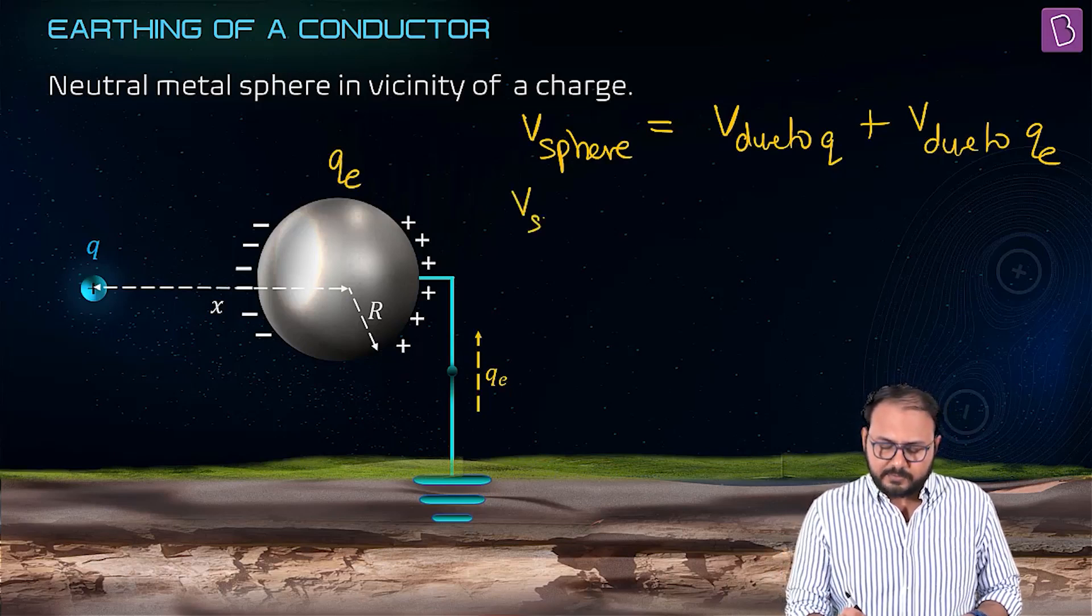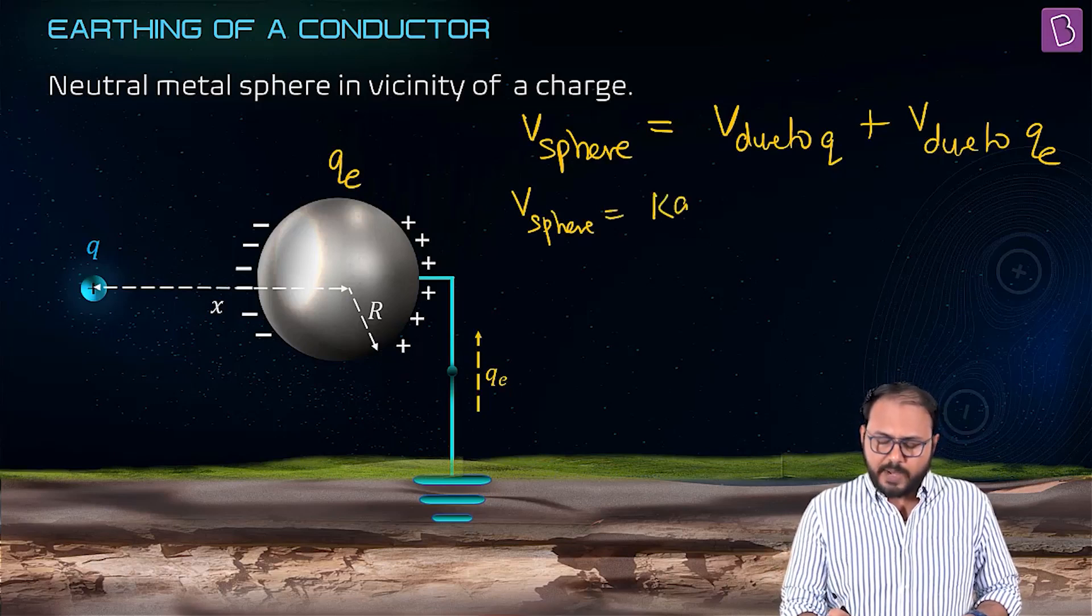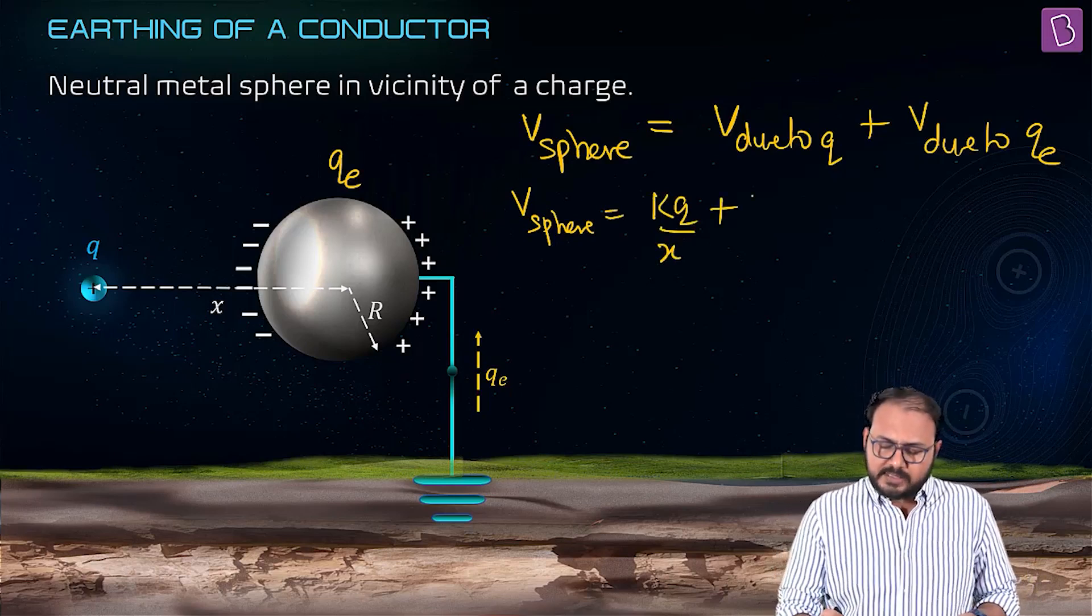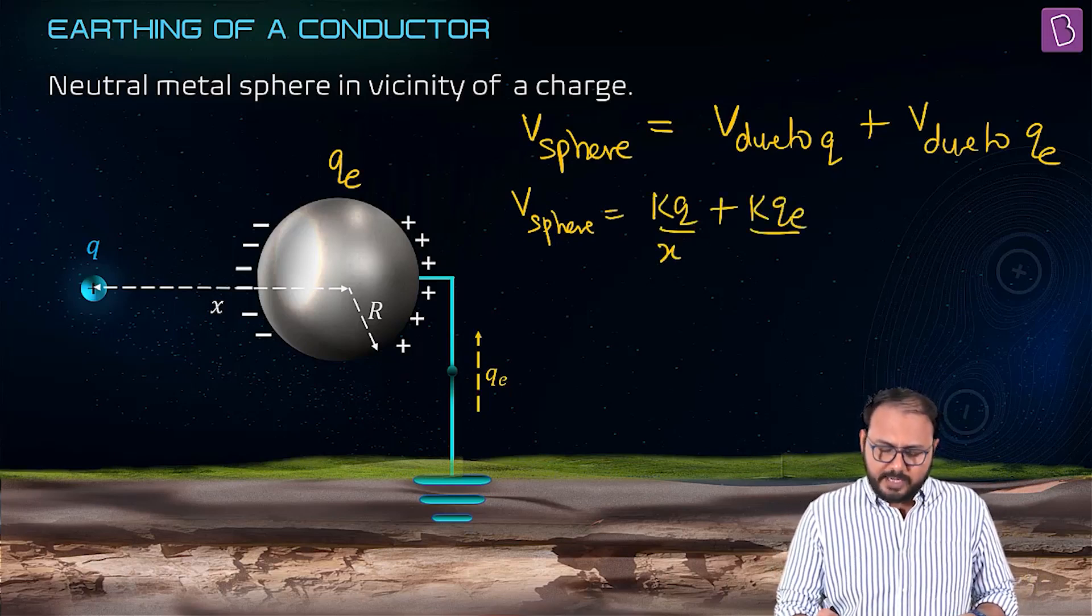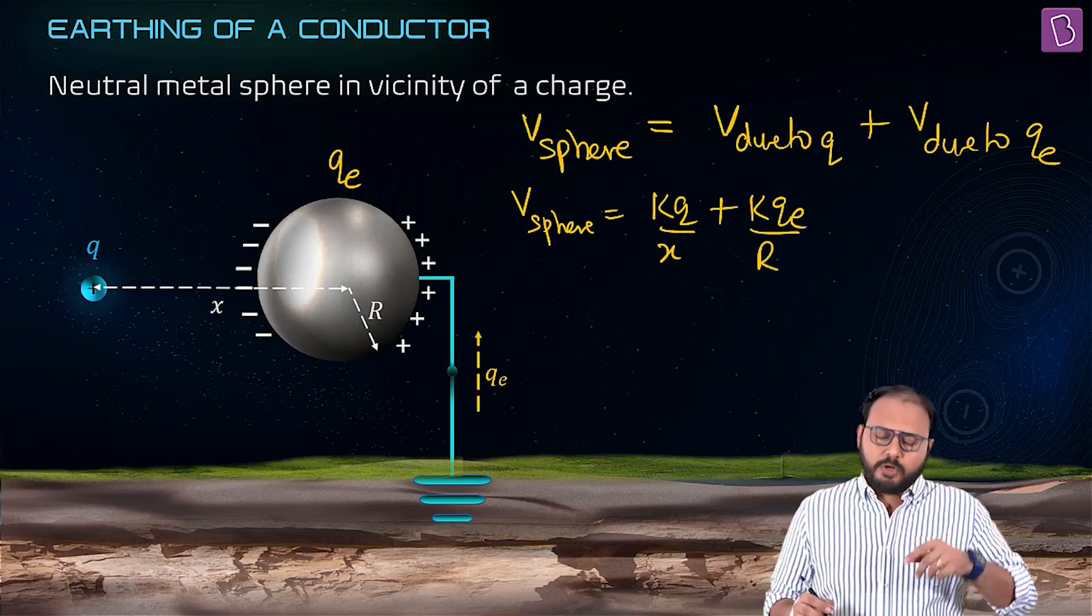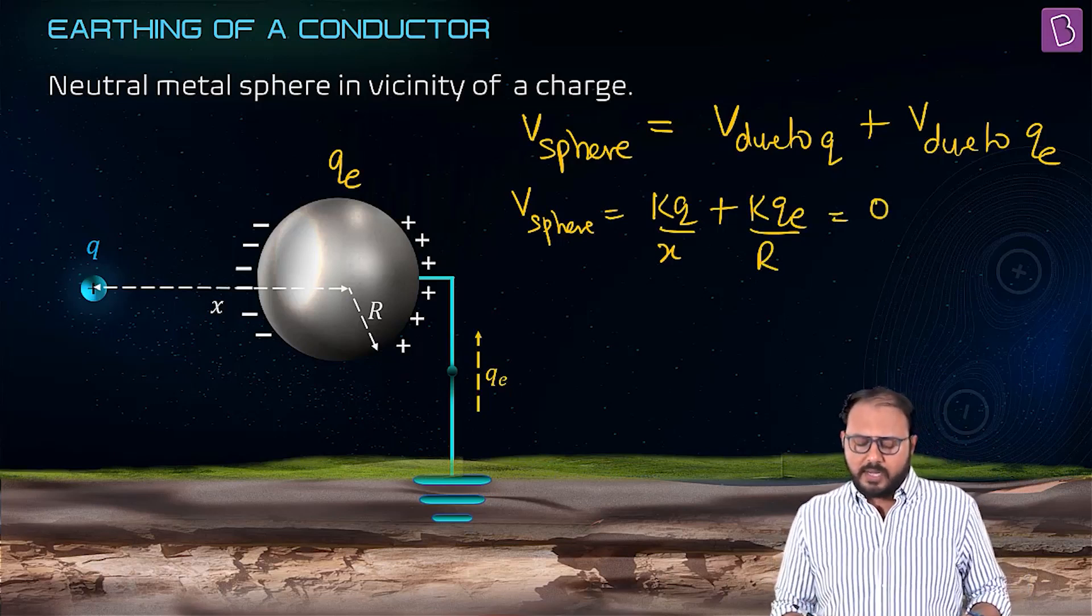Now let's say qe is on the sphere (e for earth). This V sphere equals k Q by x, plus k qe by its own radius r. What should this be equal to? Since it is connected to earth, it's equal to zero.